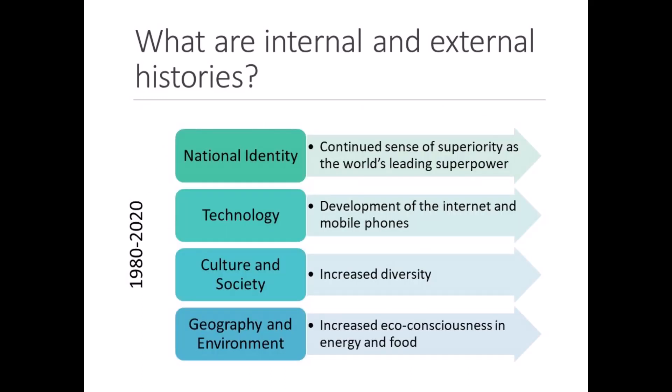Here is an example of an external history of the late 1900s. Between 1980 and 2020, at least four external forces contributed to the evolution of psychology and the zeitgeist of the times: a strong national identity as a superpower in the world, advances in technology like the internet and cell phones, an increase in diversity of people and ideas, and an increased concern with environmental issues. Note that historians examine both the topic of interest as well as the external factors that influenced it.